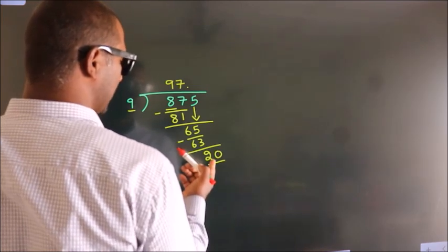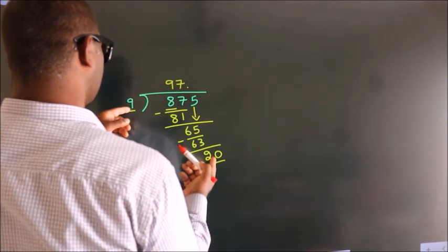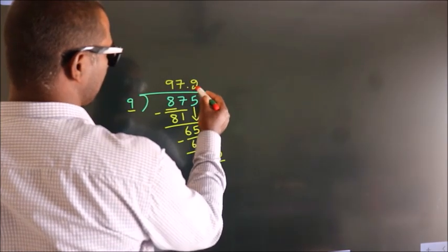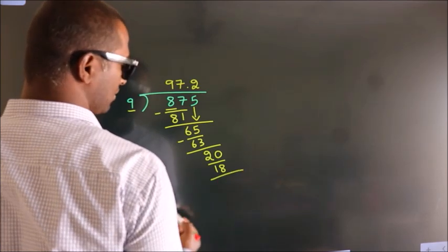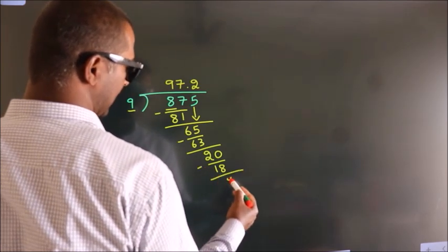A number close to 20 in 9 table is 9 2s, 18. Now we subtract, we get 2.